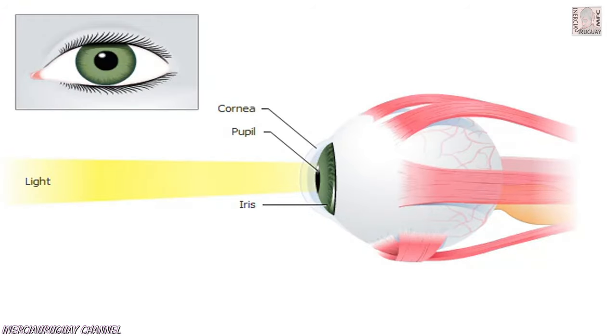Light passes into the eye through an opening called the pupil. The iris surrounds the pupil, opening or closing in degrees to control the amount of light the eye receives.